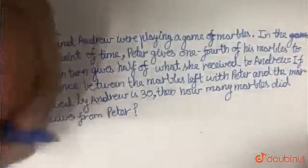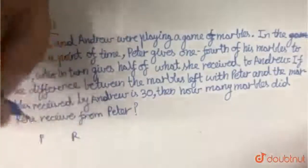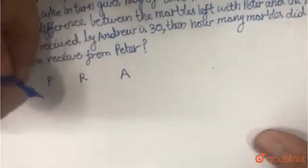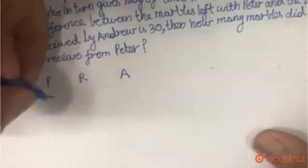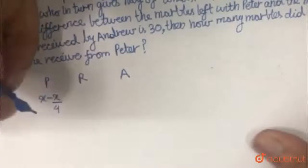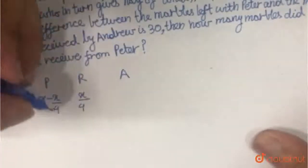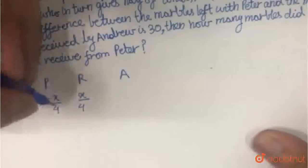So there are three people, Peter, Ren and Andrew. Let us assume Peter has X marbles. He gives one-fourth of them, which is X by 4 to Ren. So Ren receives X by 4 and Peter is left with X minus X by 4.